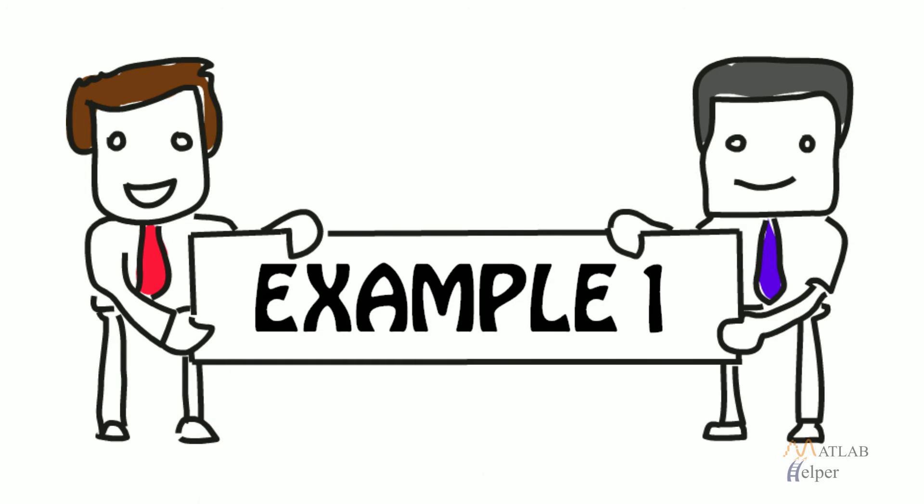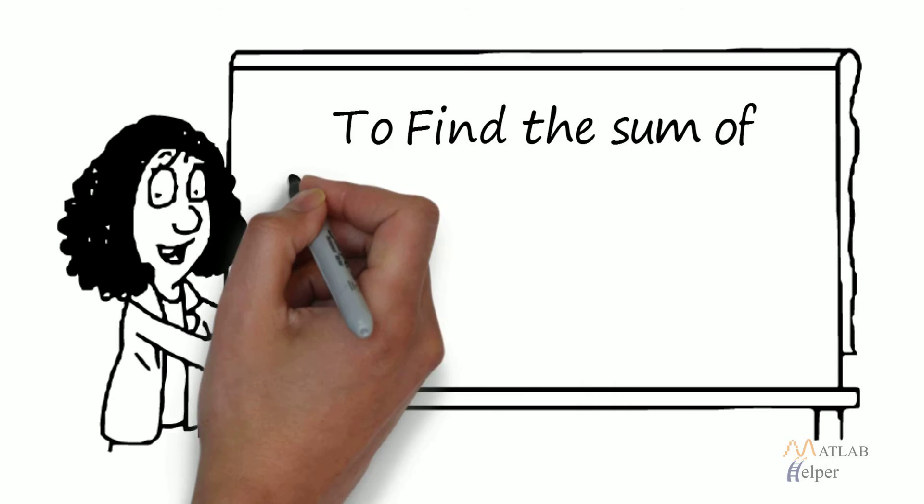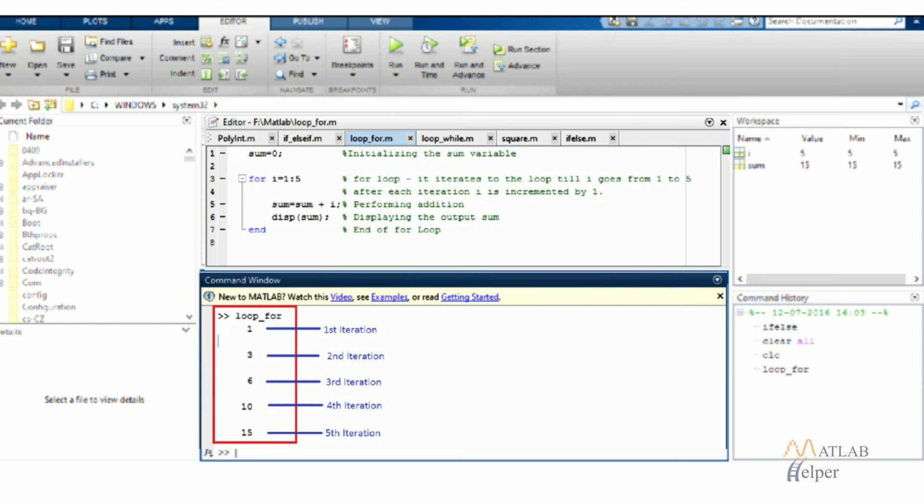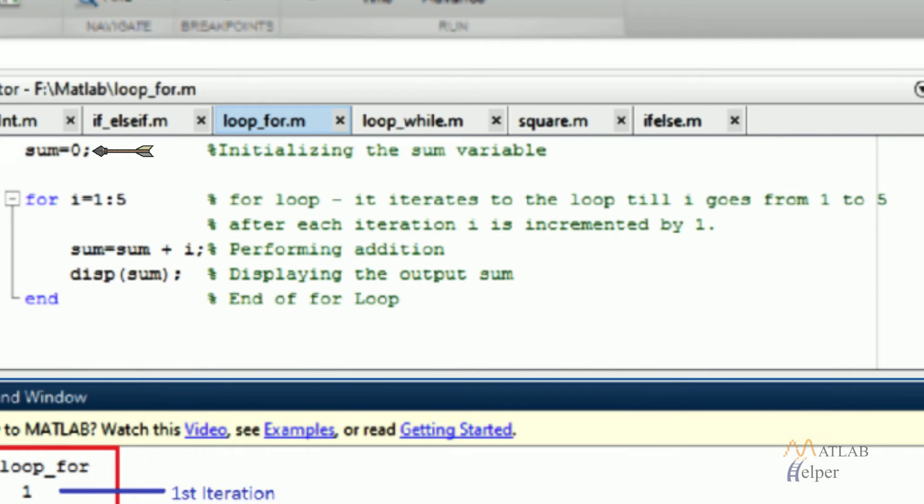Example 1: To find the sum of first five natural numbers. We have initialized the variable sum with value 0.